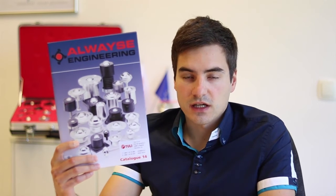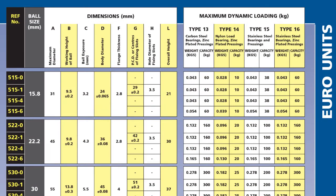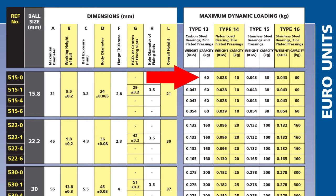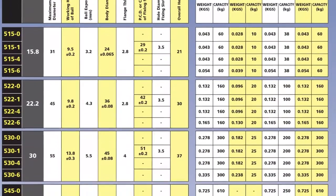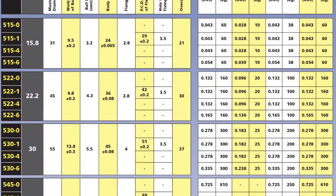If you look at the Always catalog you will see that in the column on the right there are values of maximum dynamic loading per each unit based on the type, size, and material option. This value should be higher than the one you have calculated. In our example we calculated that the load capacity should be at least 100 kilos. If we take standard Euro units, the appropriate units are the ones with ball size 22 or bigger, which have a maximum load capacity of 160 kilos.